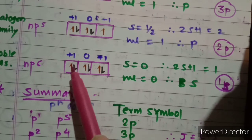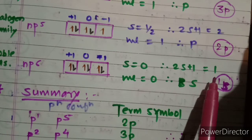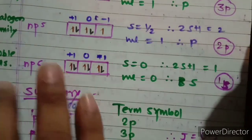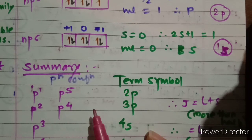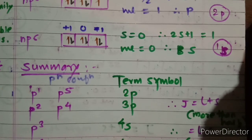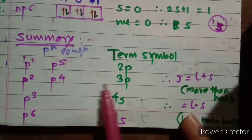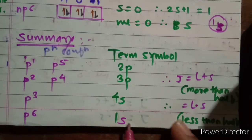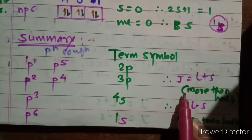Lastly, for noble gases, np6, all orbitals are fully filled. Spin S = 0, 2S+1 = 1, and ml = 0, so the term is S — giving term symbol ¹S, 'singlet S.' To summarize the p-orbital terms: p1 = p5 = ²P; p2 = p4 = ³P; p3 = ⁴S; p6 = ¹S.